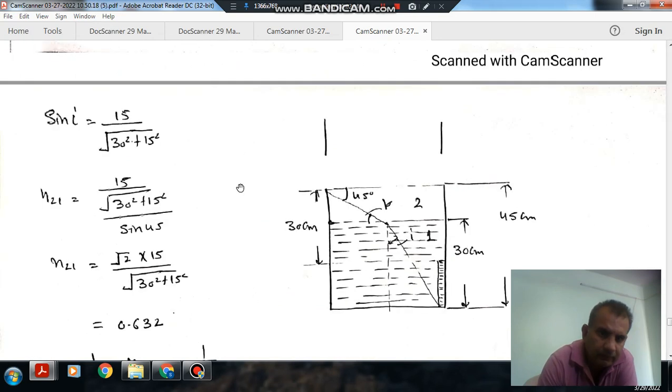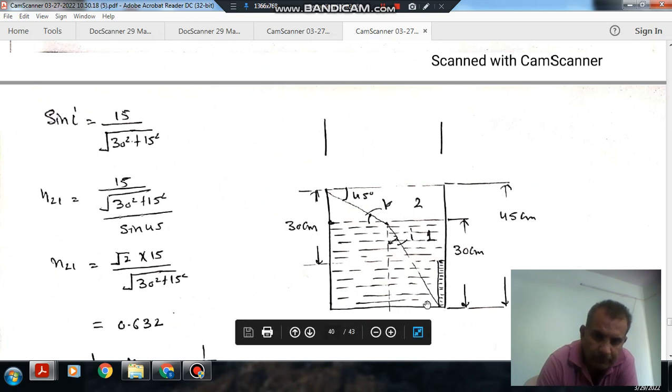This is your 15 and this is your 30. So 15 plus 30 gives us this dimension of 45 cm here.